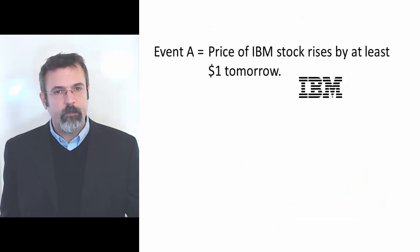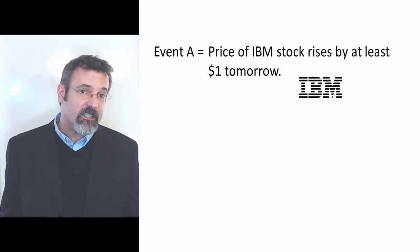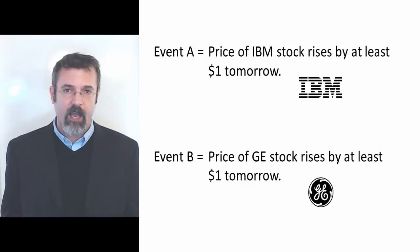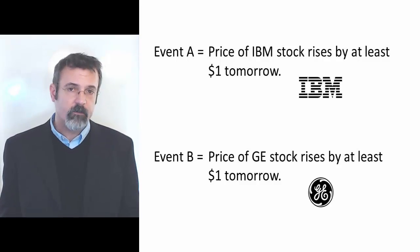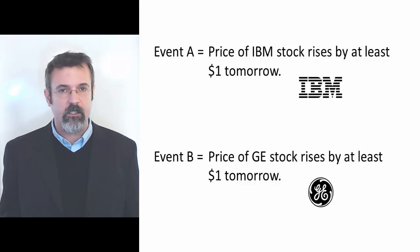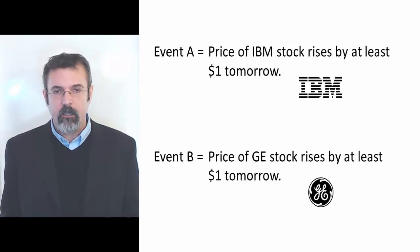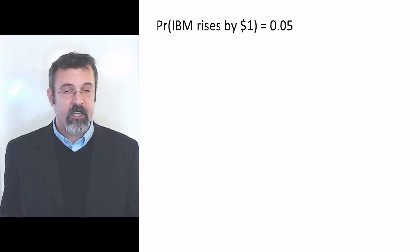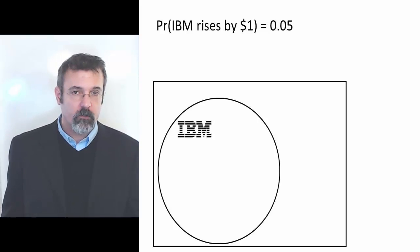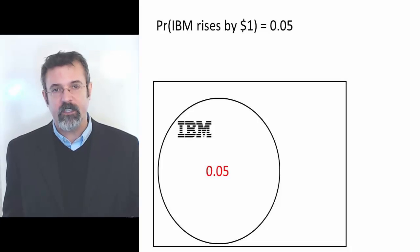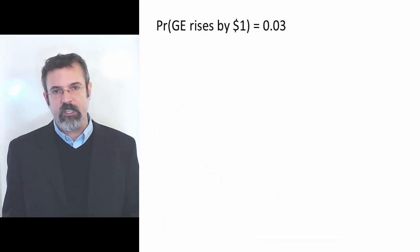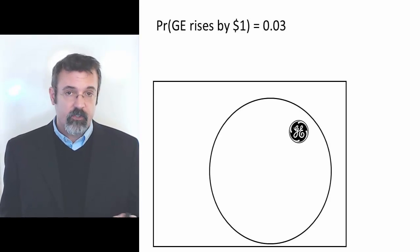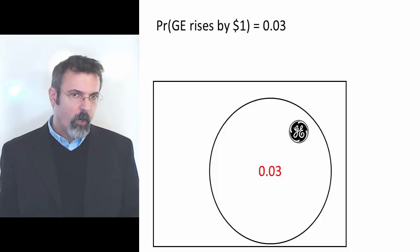Suppose we define Event A to be the price of IBM stock rises by at least $1 tomorrow, and we define Event B as the price of GE stock rises by at least $1 tomorrow. Suppose we've looked at historical data on IBM and GE stock, and based on this data, we believe that the probability of IBM rising by at least $1 is 5%. We indicate this on our Venn diagram by drawing an IBM circle and writing 5% within the IBM circle. Suppose we believe the probability of GE stock rising by $1 is 3%.